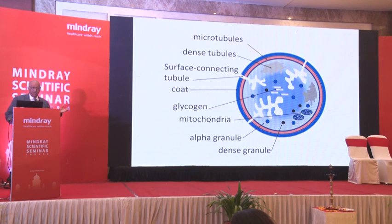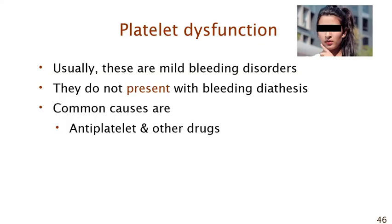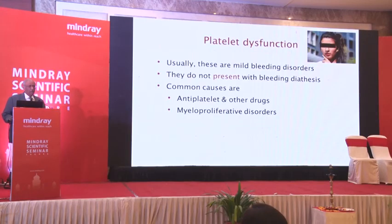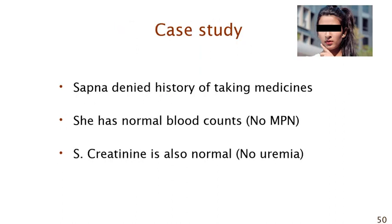We are not talking about genetic platelet disorders here — Glanzmann's thrombasthenia, Bernard-Soulier syndrome — those can be forgotten for Sapna. The common causes of acquired platelet dysfunction are: being on anti-platelet agents or other drugs that cause platelet dysfunction; various myeloproliferative disorders such as primary myelofibrosis, polycythemia, or essential thrombocythemia; and uremia. Sapna is not on any medicines, her blood counts are normal ruling out myeloproliferative neoplasms, and her creatinine is normal ruling out uremia. So thrombopathy is also excluded.